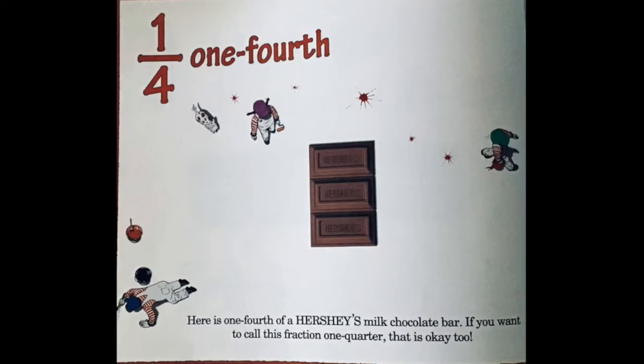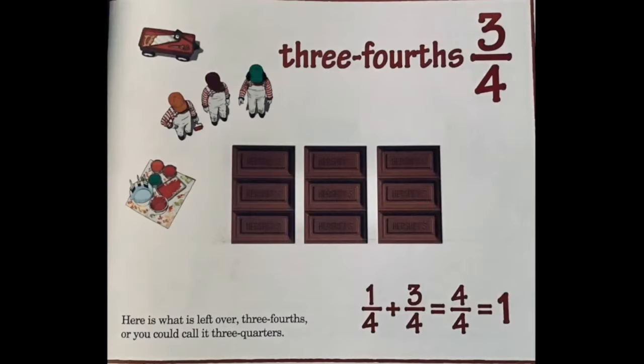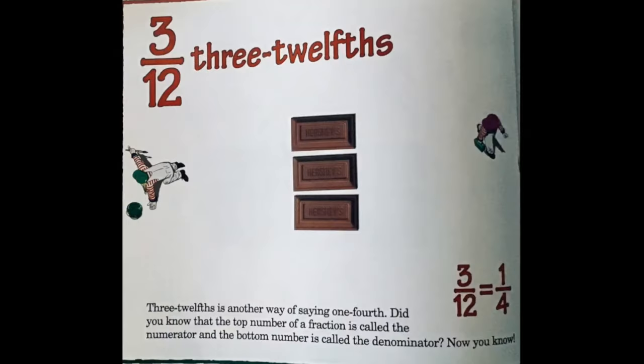Here is one fourth of a Hershey's milk chocolate bar. If you want to call this fraction one quarter, that's okay too. Here is what is left over — three fourths, or you could call it three quarters. Three twelfths is another way of saying one fourth. Did you know that the top number of a fraction is called the numerator, and the bottom number is called the denominator? Now you know.